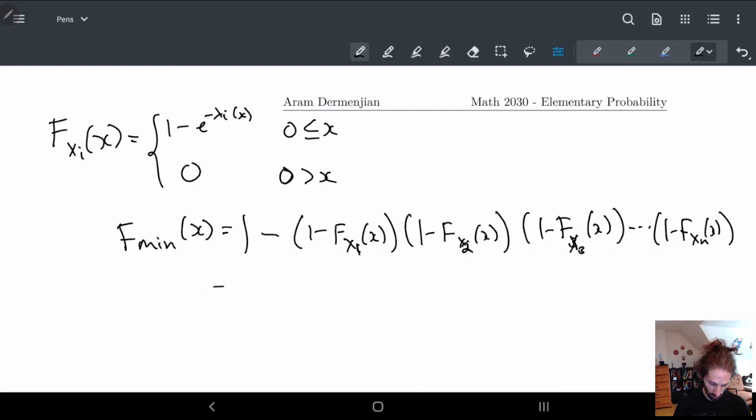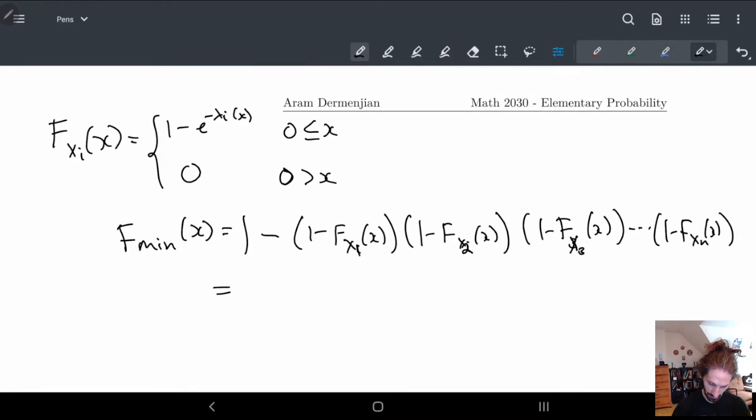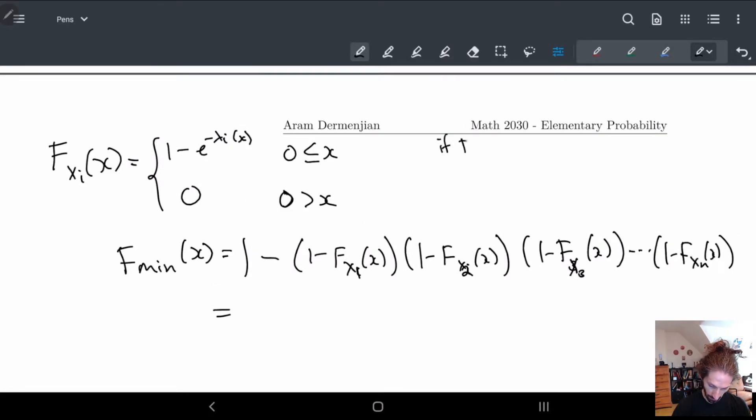Here we know what each of these are whenever it's not Xᵢ, right? So as long as it's not zero, notice how if it's zero, if one of them are zero, then F_min is... So if F_Xᵢ(x) is equal to zero for any of them, this implies that this multiplication on the right hand side is zero. So this implies that F_min(x) is equal to one.